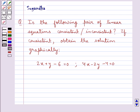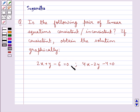Hello and welcome to the session. Today I will help you with the following question. The question says, is the following pair of linear equations consistent or inconsistent? If consistent, obtain the solution graphically. 2x plus y minus 6 equal to 0 and 4x minus 2y minus 4 equal to 0.